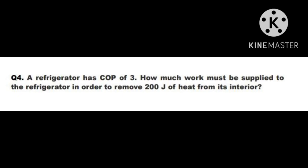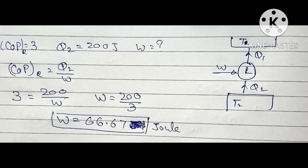Question number 4: A refrigerator has a COP of 3. How much work must be supplied to remove 200 Joule of heat from its interior? COP is given, Q2 = 200 J, and work is required. Using COP = Q2 / W, we get 3 = 200 / W, so W = 200 / 3 = 66.67 Joule.